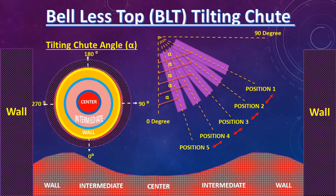In the furnace, we can divide the zone of material fall as: Center — when tilting angle alpha is lower; Wall — when tilting angle alpha is higher; and Intermediate — when tilting angle alpha is in between center and wall. It is clear that if alpha angle is lower, at around 14 degrees, burden material will fall near the center of the furnace, and on a higher alpha angle, burden material will fall towards the wall or periphery.